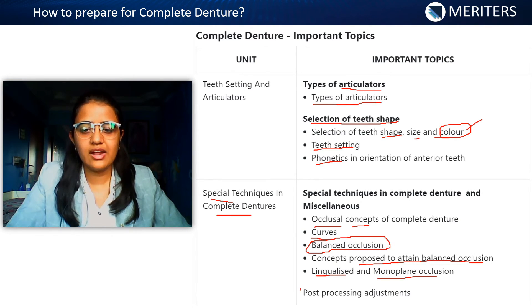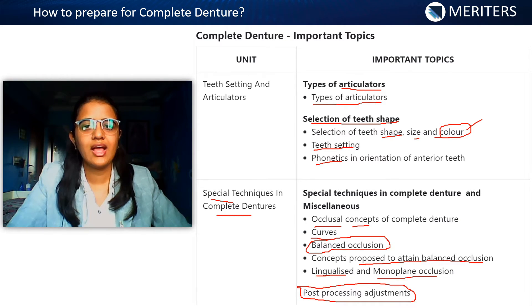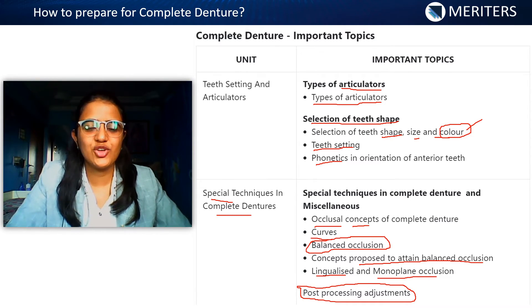Then we move on to post-processing adjustment. This involves laboratory remounting and clinical remounting — you need to know the steps of remounting.